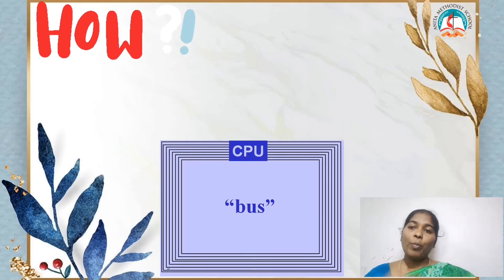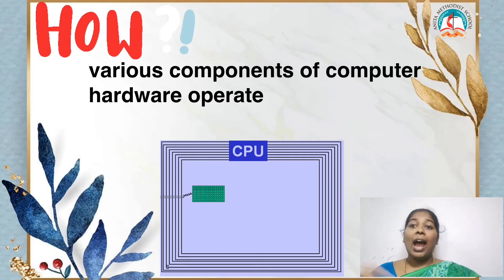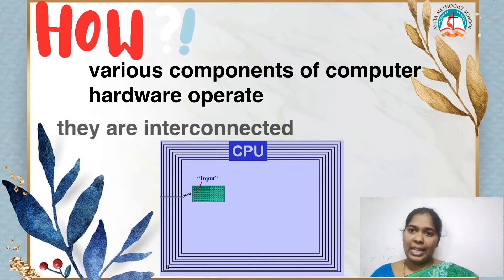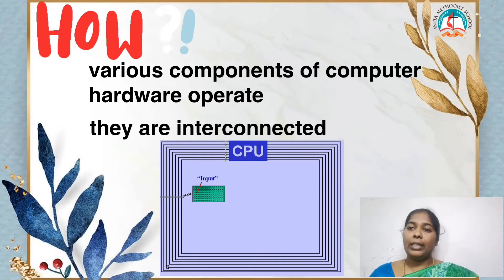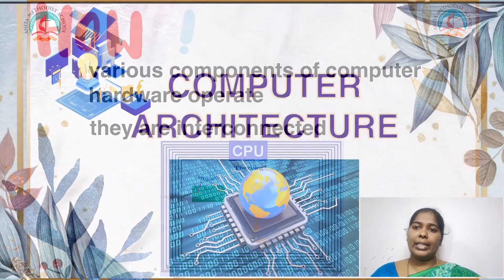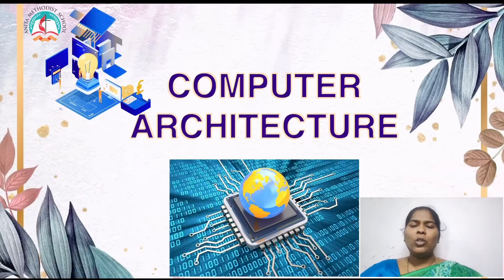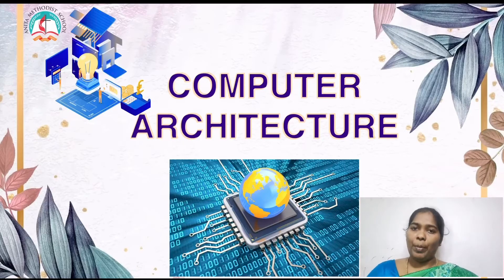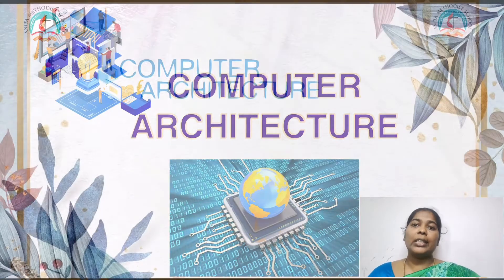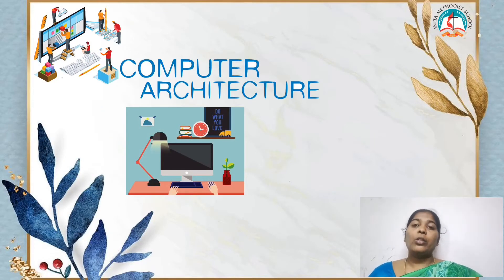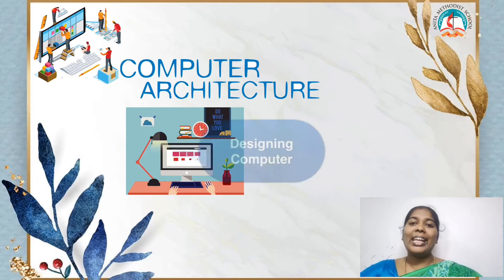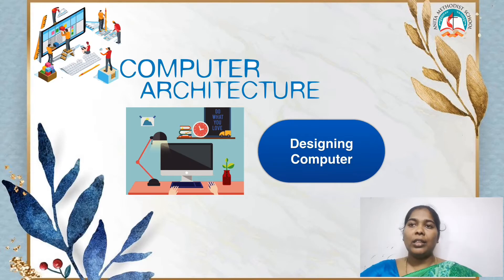Computer organization tells us how various components of computer hardware operate and how they are interconnected. About computer architecture — computer organization deals with the hardware components. Architecture also deals with hardware components, but the difference is it is transparent to the programmer. It is about how to design a computer — it is like an engineering part.